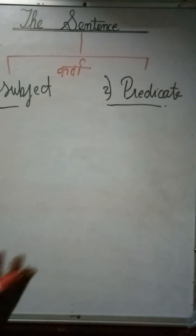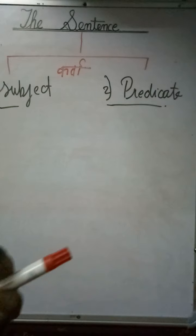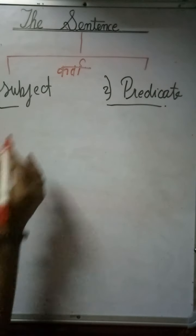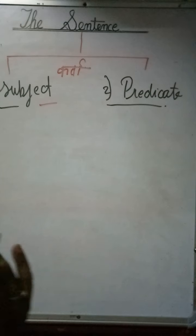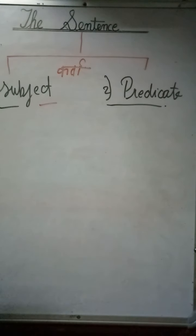The predicate is the rest of the sentence. For example: 'Ram is going to the market.' Ram is the subject and the rest of the sentence is the predicate.